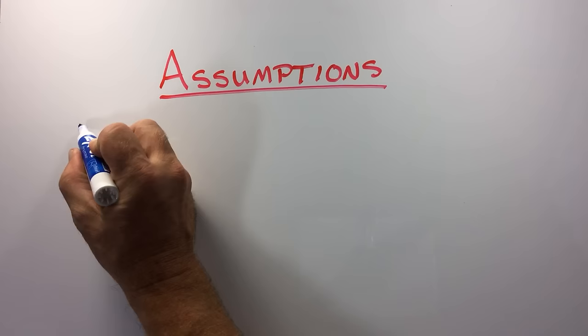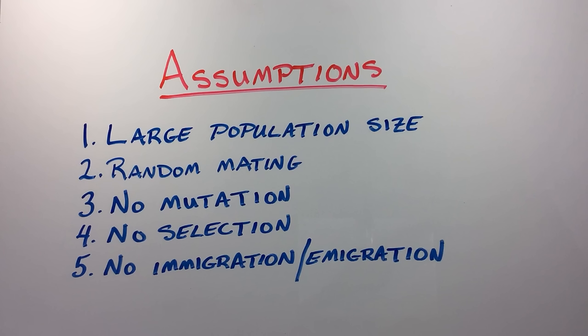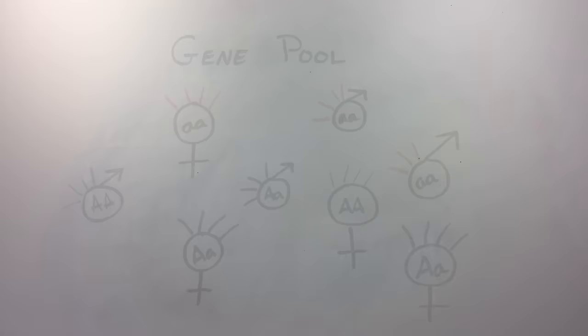The important point is that these expected genotype frequencies will occur only if certain assumptions are met. The assumptions are large population size, random mating, no mutation, no selection, and no migration into or out of the population. If these conditions are met, the population will remain in Hardy-Weinberg equilibrium. In equilibrium, allele and genotype frequencies do not change from generation to generation.